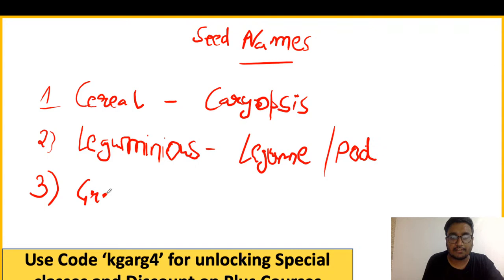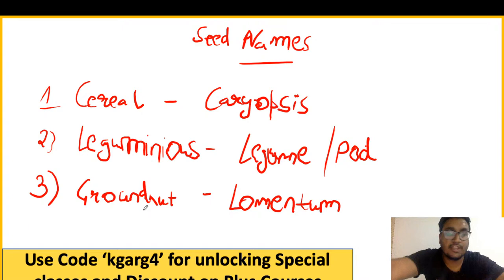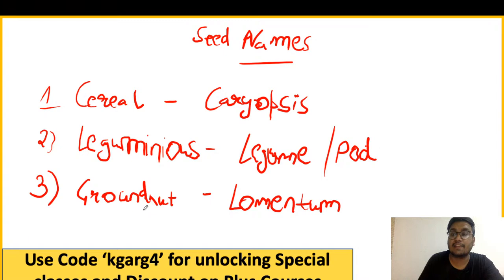This entire table can generate around 15–20 questions from your paper. For mango, the seed type is called drupe. For bear, plum, and date palm, the fruit type is also called drupe.